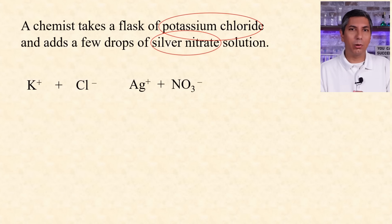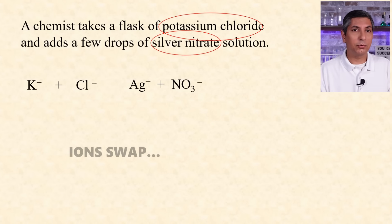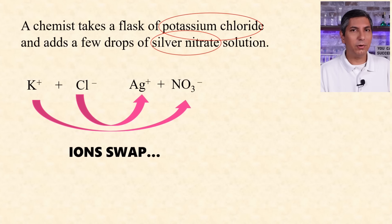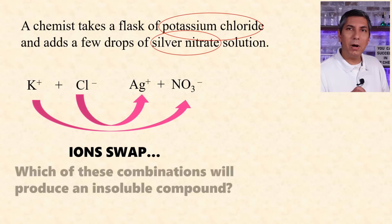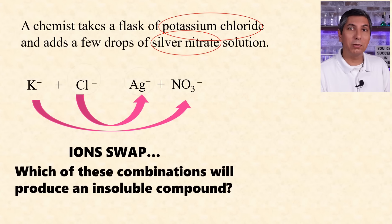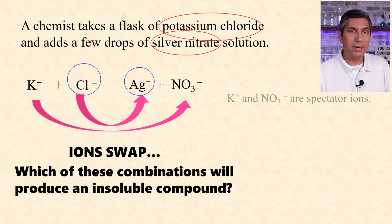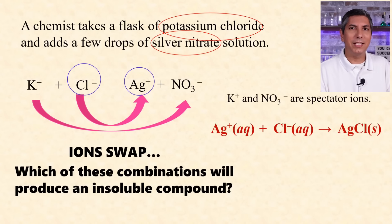We have potassium, chloride, silver, and nitrate ions. These ions will try to swap partners, but only one of them will produce a product. All nitrates and alkali metal ions are soluble, so the precipitate must be silver chloride. We omit the spectator ions, and this is the net ionic equation.